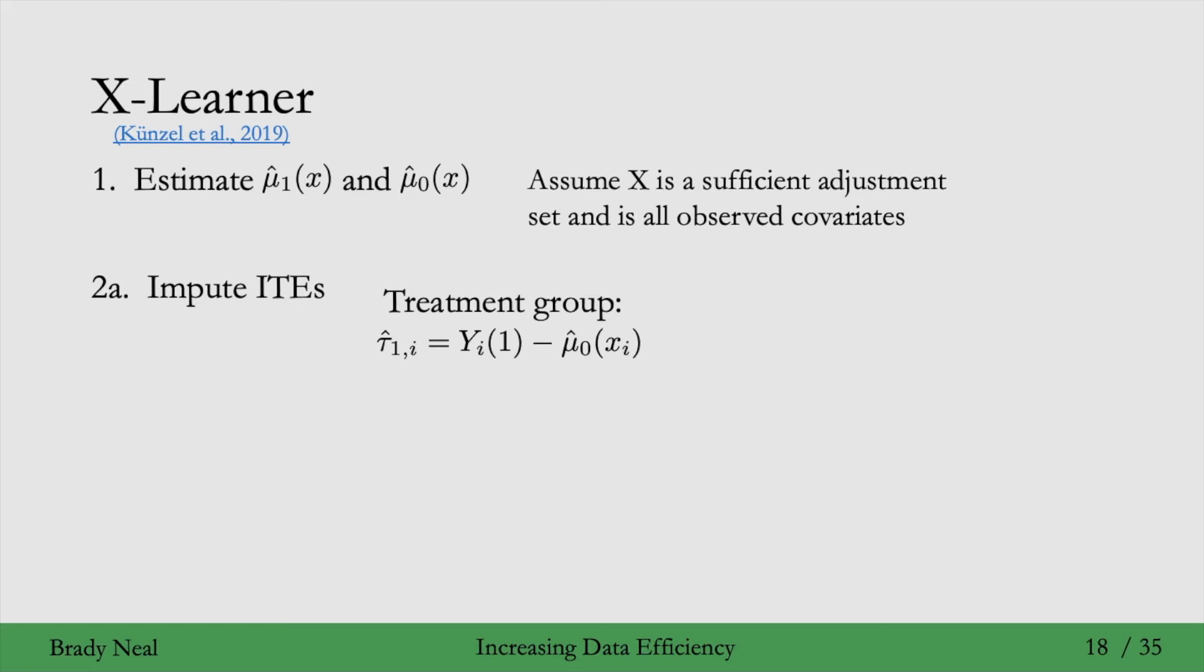In step 2a, we impute the individual treatment effects. For the treatment group data, we compute the ITEs for the treatment group using the observed outcome, which is Y1 for each of the individuals i. Then we use the model that we fit for mu0,